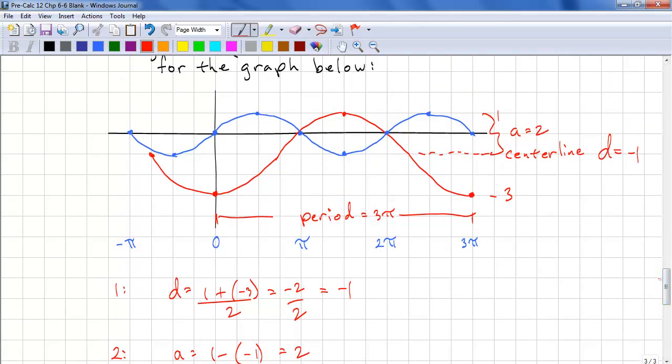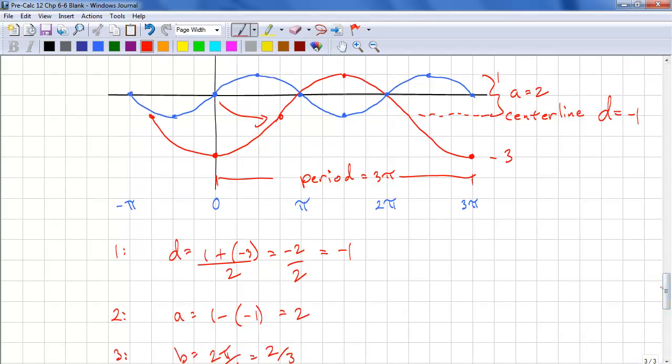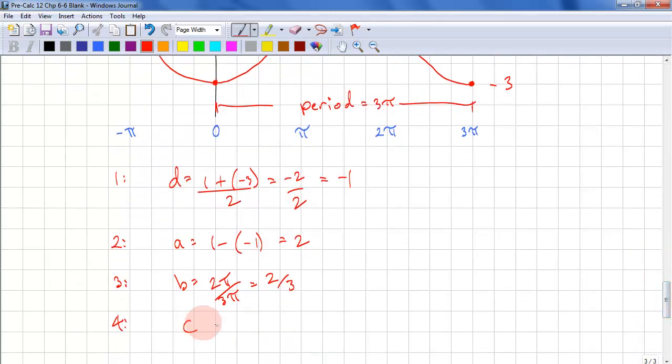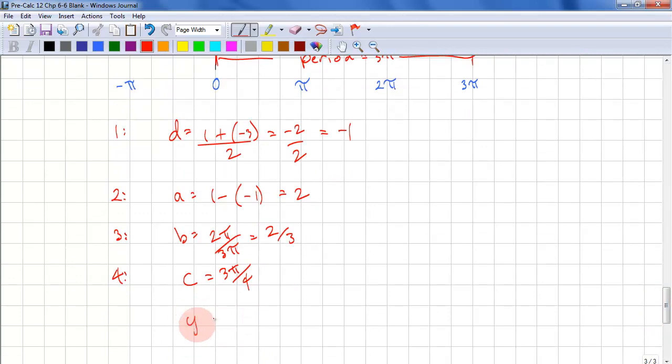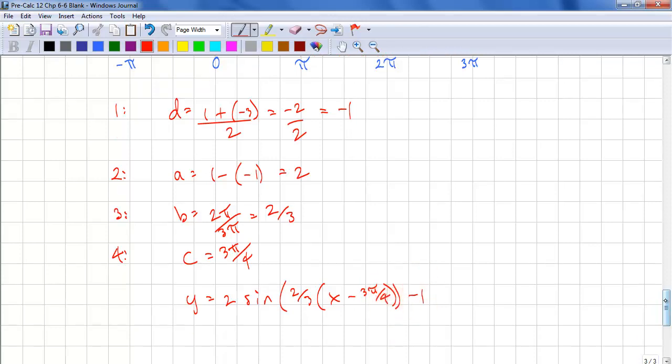And lastly, we need to calculate where the y-intercept is moved. Let's move right 3 quarters of pi. So c equals 3 quarters of a pi. So our final function looks like y equals 2 sine 2 thirds x minus 3 pi over 4 minus 1. And that completes this lesson.